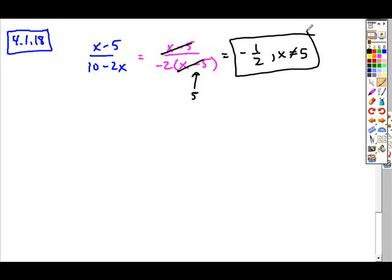So even though it simplifies to an actual rational number with no variables in it, what this would look like is there would be a hole in the graph at 5. This graph would not exist at that place.